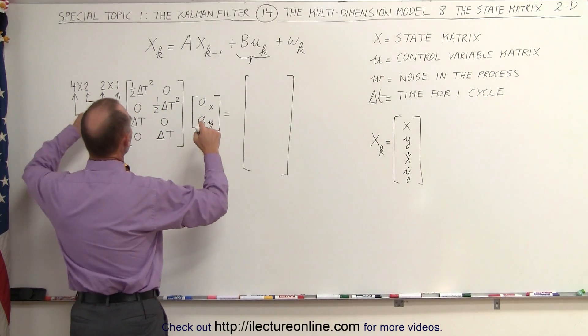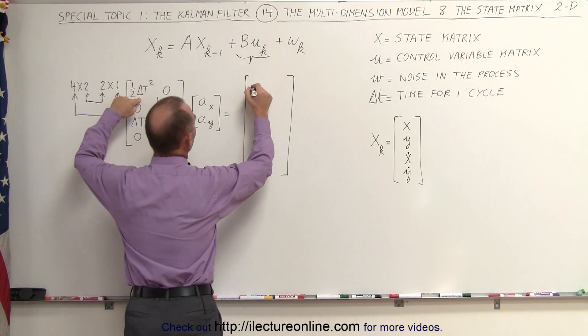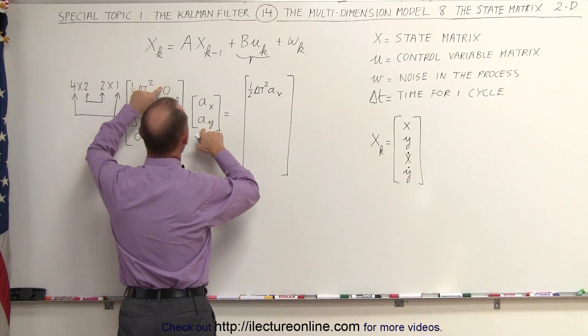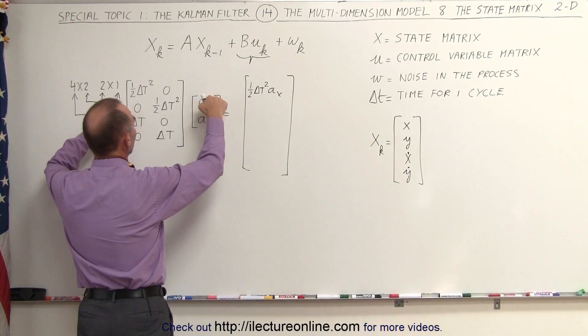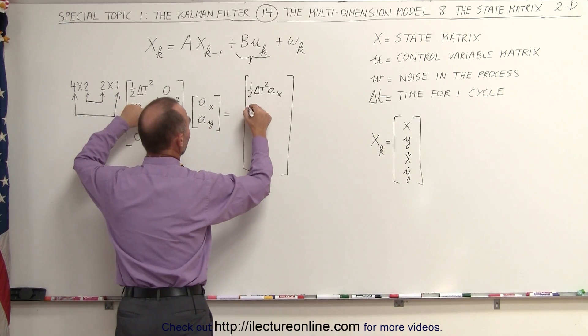So when we multiply we get the following: one half delta t squared times a sub x and zero times a sub y. Here we have zero times a sub x, one half times delta t squared times a sub y.